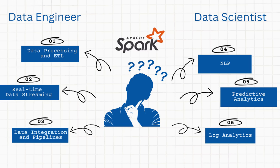It's awesome at processing massive amounts of data, both structured and unstructured. With Spark, you can clean, transform, aggregate, and enrich your data to make it ready for further analysis or reporting. Case number two: real-time data streaming. Imagine you're working with real-time data streams like data from IoT devices, social media feeds, or web logs — you can use Spark Streaming, part of Apache Spark, to process and analyze that data in real-time right from the source.